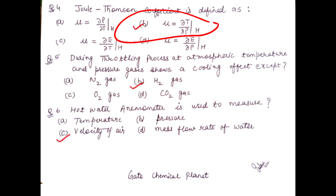Question number five: during the throttling process at atmospheric temperature and pressure, gases show a cooling effect — except which gas? Except hydrogen gas, all other gases such as nitrogen, oxygen, and carbon dioxide show a cooling effect at atmospheric temperature and pressure. So the correct option is B.